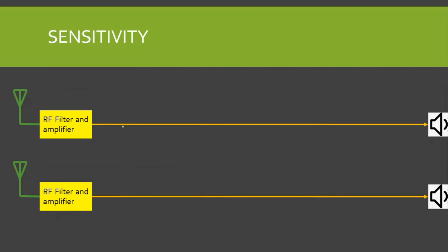Let us understand this by an example. I have two receivers: Receiver 1 and Receiver 2. I have only kept the RF section for better understanding, with loudspeakers at the end. Suppose the power required to drive each loudspeaker is 10 Watts.